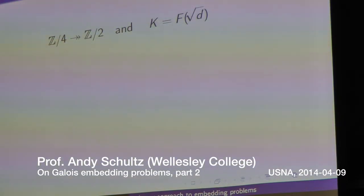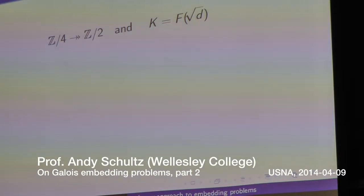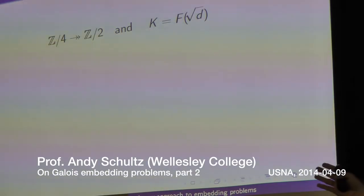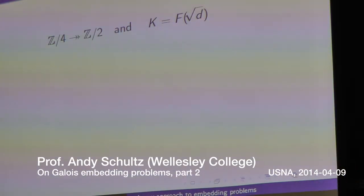We have the right roots of unity, so we can't be in characteristic 2. I have this extension. I want to know, does that extension actually sit inside of the Z4 extension?